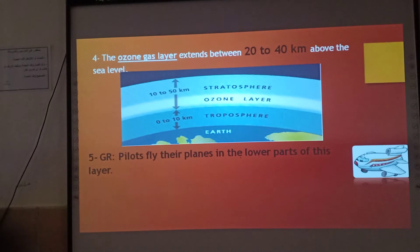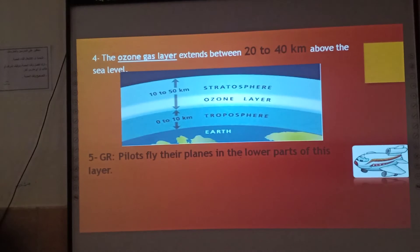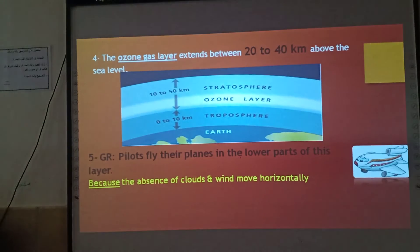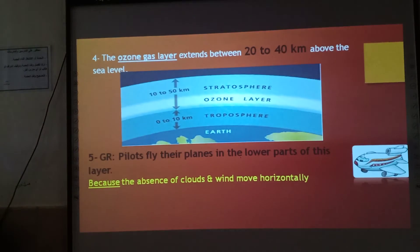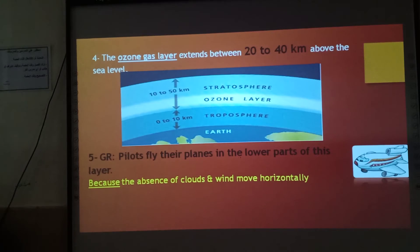Pilots prefer to fly their planes in the lower part of this layer. Why? Because of the absence of clouds and the wind moves horizontally. There are no clouds in this layer. In the troposphere the wind moves vertically, but here in the stratosphere the wind moves horizontally.